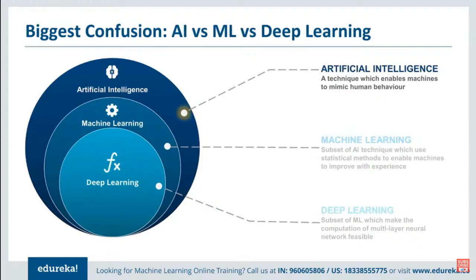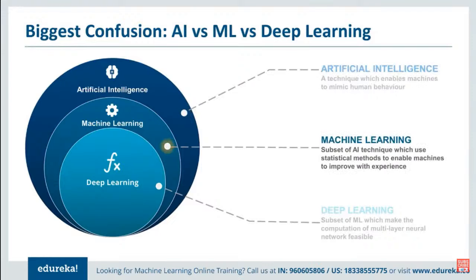AI covers anything which enables the computer to behave like humans. Think of the famous Turing test to determine whether a computer is capable of thinking like a human being. If you're talking to Siri on your phone and you get an answer, you're already very close to it. So that was about artificial intelligence; now coming to the machine learning part.